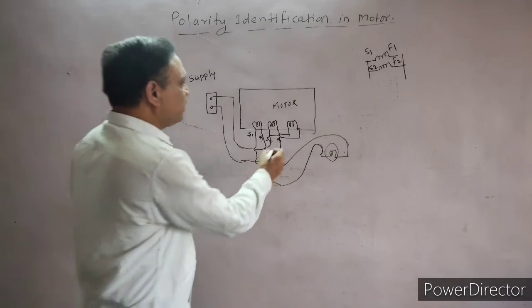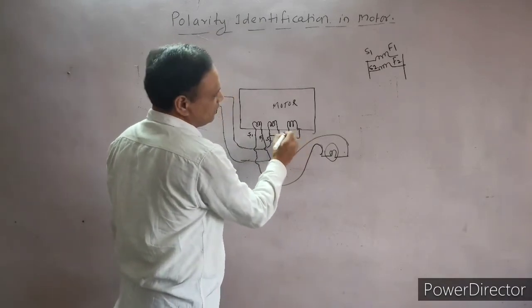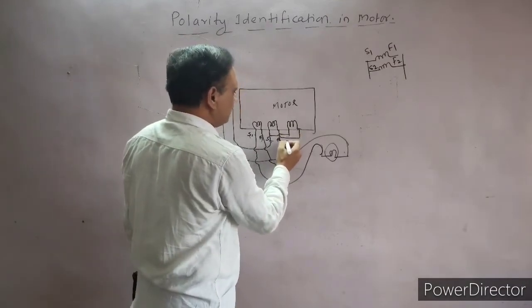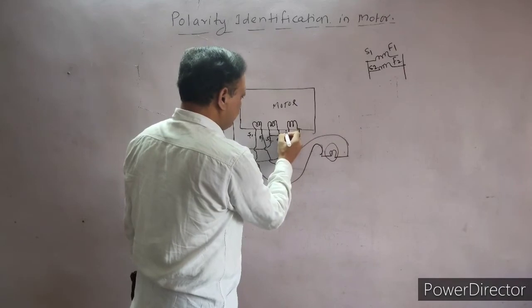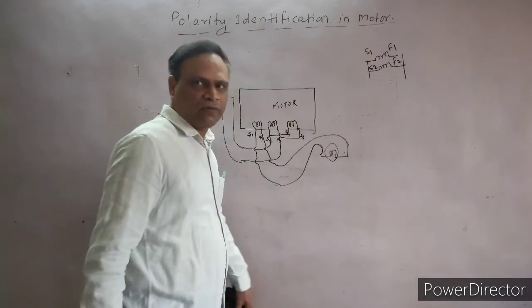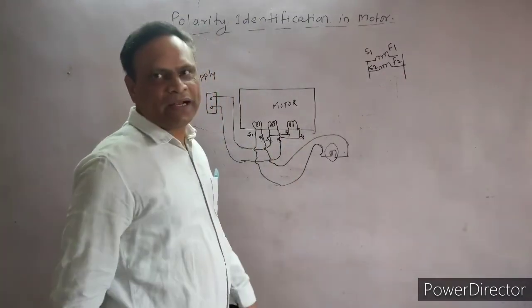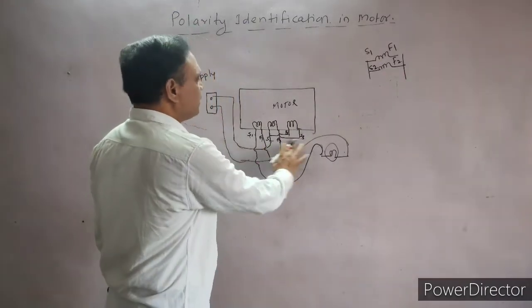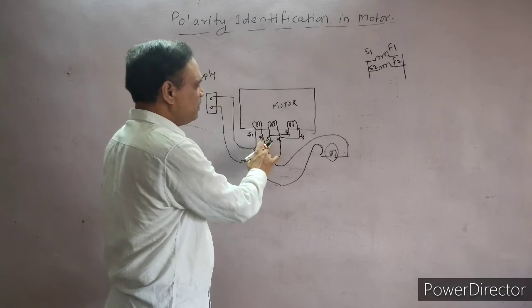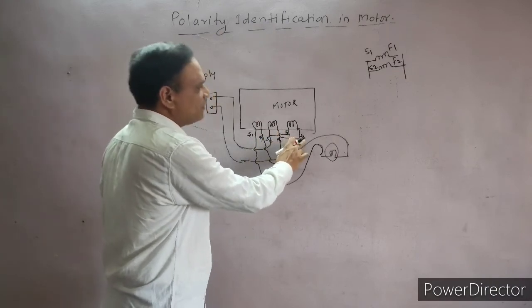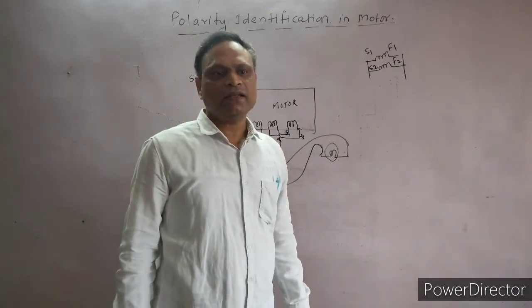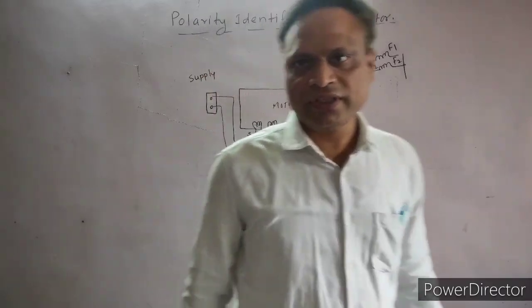Since the lamp didn't glow, the connection is in reverse — series opposition — which means this is the finishing end and this is the starting end of the third coil. In this way we can find out the polarity among all terminals. Once identified, we can mark them: this is A1, this is A2, this is B1, this is B2, this is C1, and this is C2. Accordingly, we can now make star or delta connections. Thank you very much for watching.